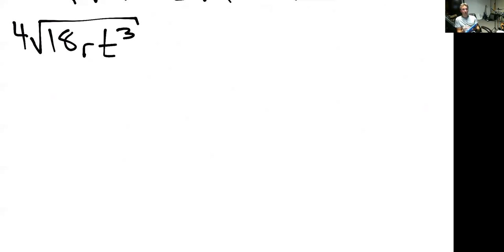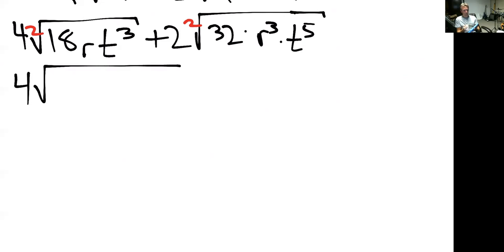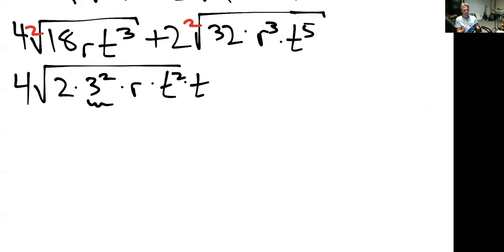The last problem: four times the square root of 18R times T cubed plus two times the square root of 32 times R cubed times T to the fifth. We'll break this down into groups of things multiplied together two times, since this is the square root. Eighteen is two times nine, so that's two times three squared — we already see something multiplied together two times — times R times T squared times T.